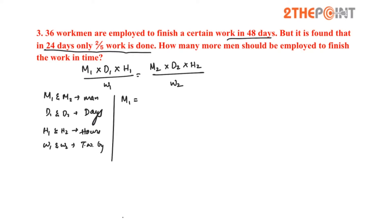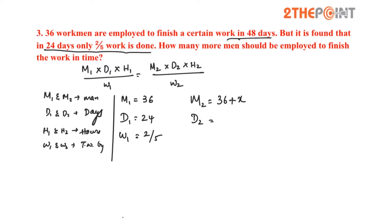M1 equals 36 workmen employed to finish the work in 48 days. But these 36 men in 24 days are completing only two-fifths of the work. How many more men shall be employed to finish in time? So M2 is 36 plus x, and D2: out of 48 days, 24 days are completed, so 24 days remain. Two-fifths of the work is done, so three-fifths of the work is left. We need to solve for x.